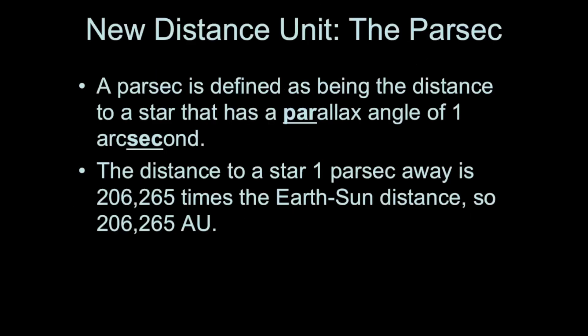This leads us to the unit that we call the parsec. A parsec is the distance to a star that has a parallax angle of one arc second. That's where the word parsec comes from, parallax angle of one arc second.